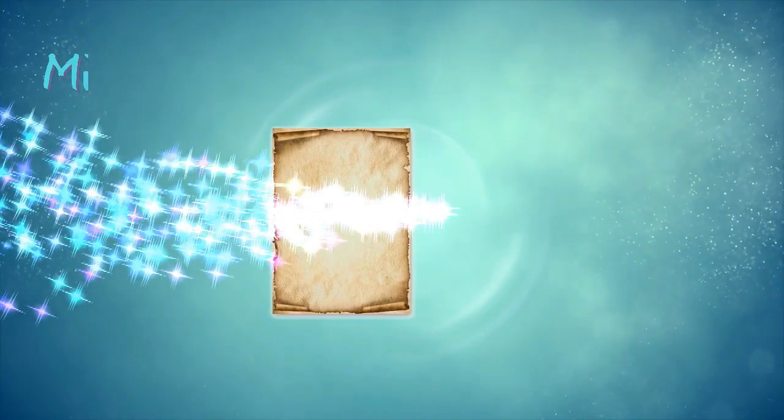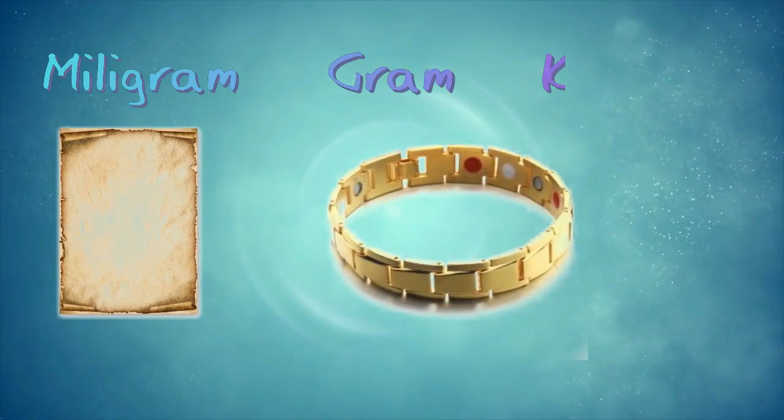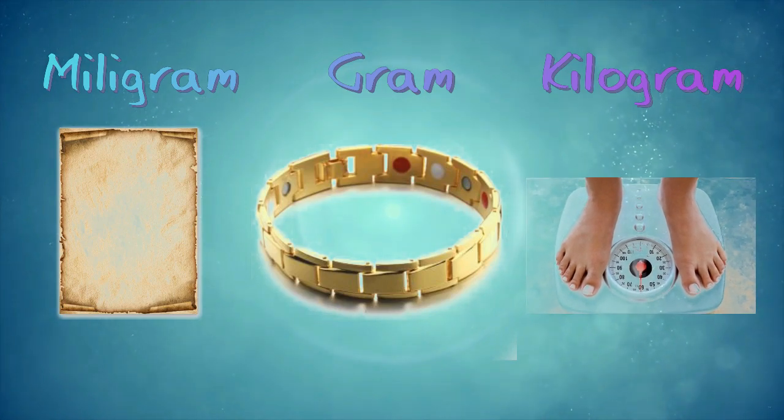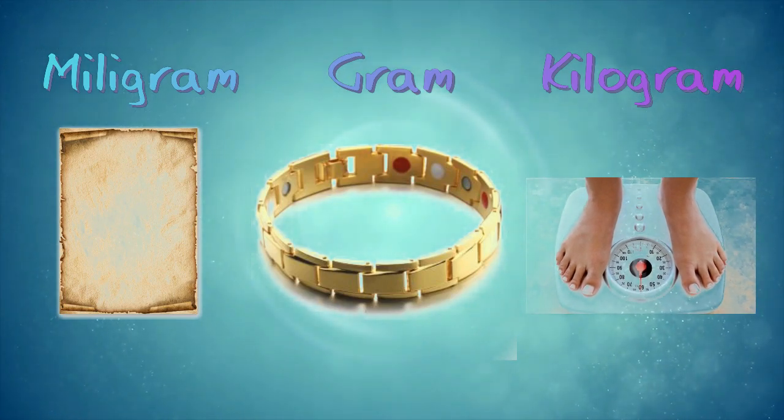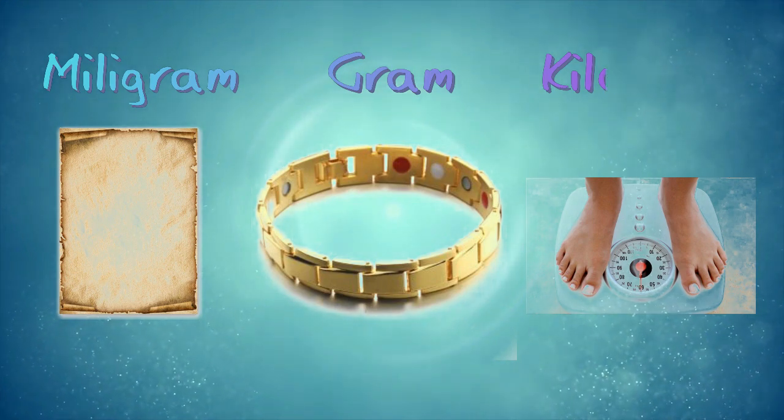Mass metric units. In the mass metric unit system we have three basic units: milligram for soft materials, gram for light materials, kilogram for heavy materials.